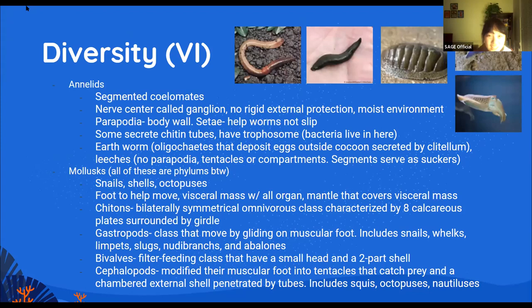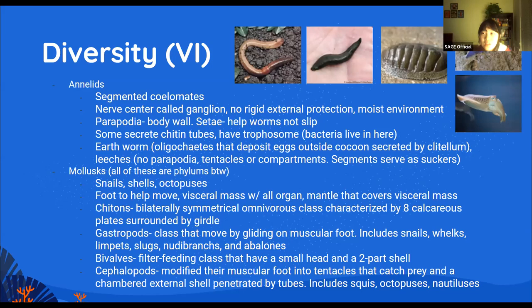Annelids, or phylum Annelida, are segmented coelomates — worms with a bunch of different segments. The most obvious example is earthworms. They have a nerve center called a ganglion, no protective covering from the environment, and must live in moist environments to take up nutrients. Examples include earthworms and leeches — the segments of leeches serve as suckers, which is why they latch onto you.